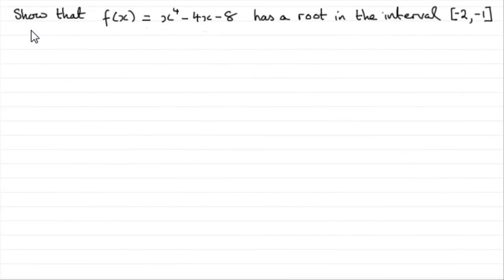Hi. Now in this part we've got to show that f(x) which equals x to the power 4 minus 4x minus 8 has a root in the interval -2 to -1. Note by the way how we do write intervals in square brackets.